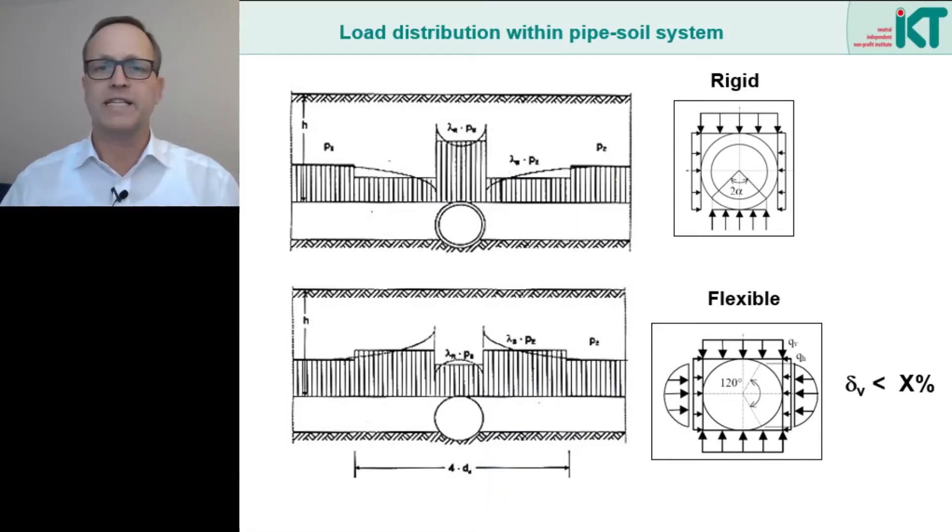The most interesting aspect in the structural calculation of flexible pipes is the proof of deformation. Because the pipes may deform up to a maximum diameter change of, for example, 4 to 6%. It is assumed that up to this deformation there won't be any major problems for stability, tightness, or operational safety. Why does that make sense?